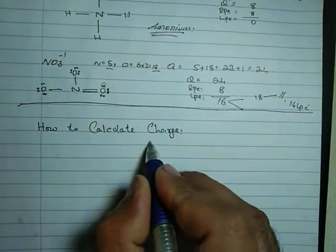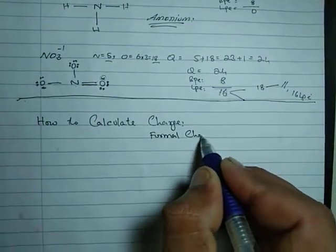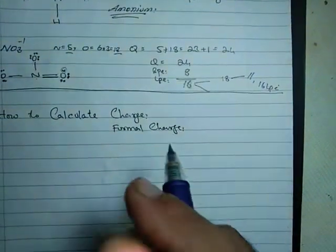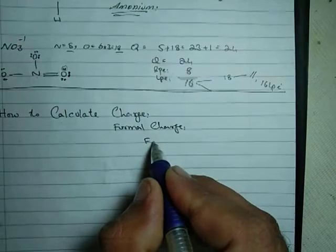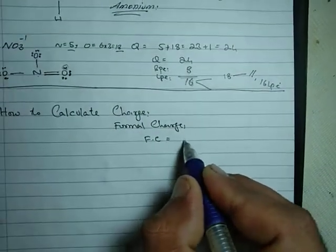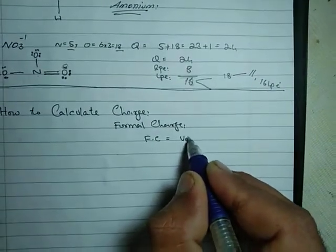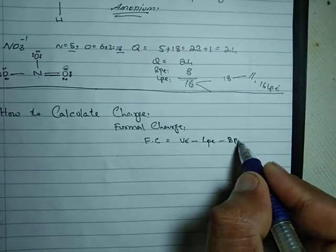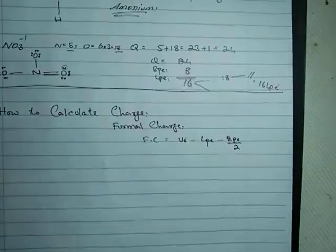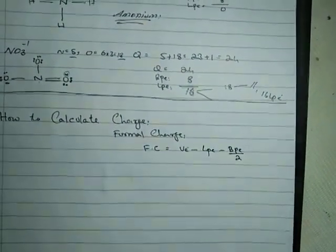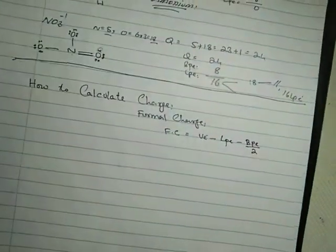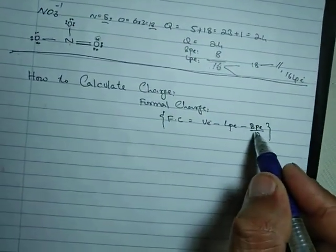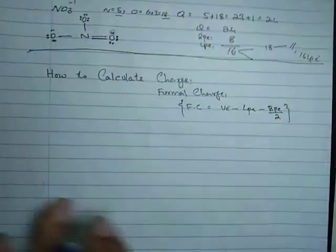The formula is: formal charge FC equals valence electron minus lone pair electron minus bond pair electron divided by two. That's the formula we'll use.